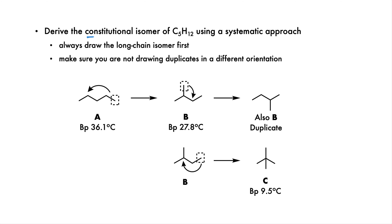You can derive all of the constitutional isomers of C5H12 if you use a very systematic approach. You want to make sure that you find all of the unique constitutional isomers but don't draw any duplicates. Here is my method. Always draw the long-chain isomer first — we'll call this molecule A. Then take a CH3 off the end and put it on the second carbon to get your first branched isomer B. Next, move the methyl down one more carbon. When we do this, we find that this third molecule is also B, just drawn in reverse order.